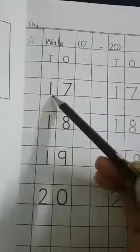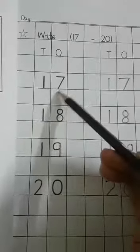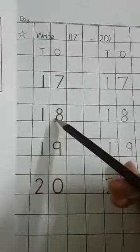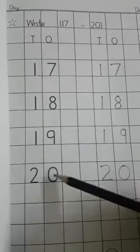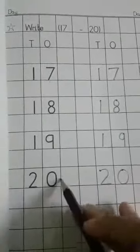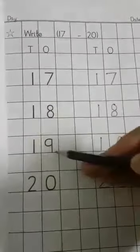Start reading. 1 and 7 makes 17, 1 and 8 makes 18, 1 and 9 makes 19, and after 9... 7, 8, 9.